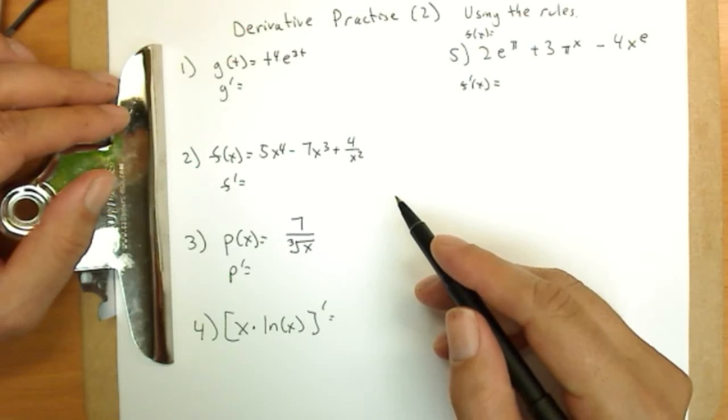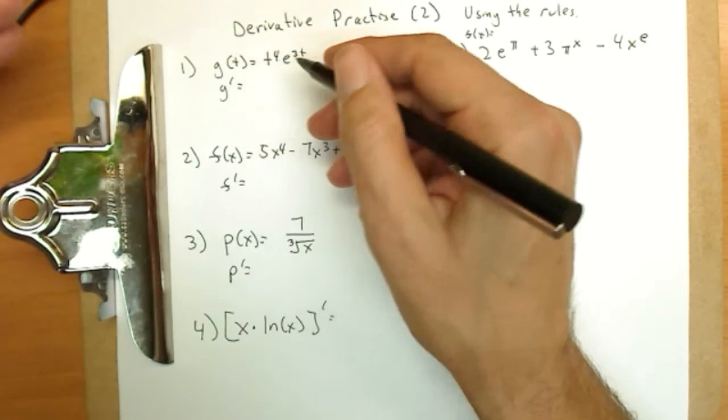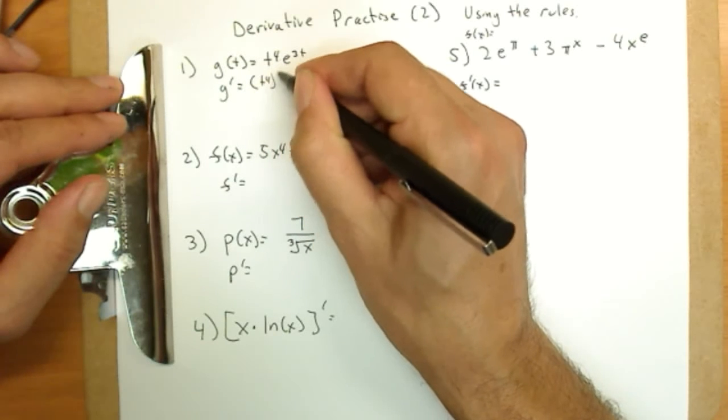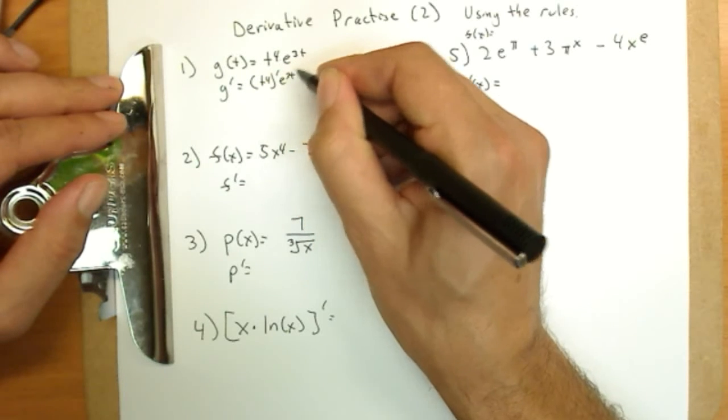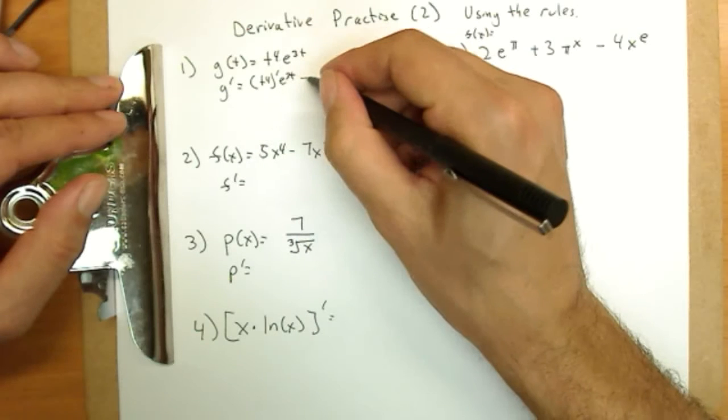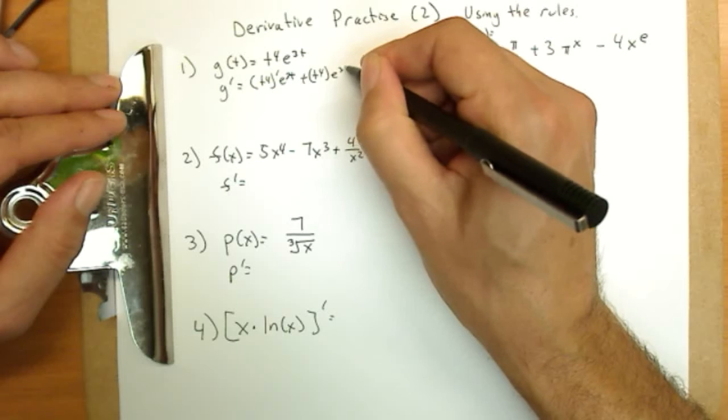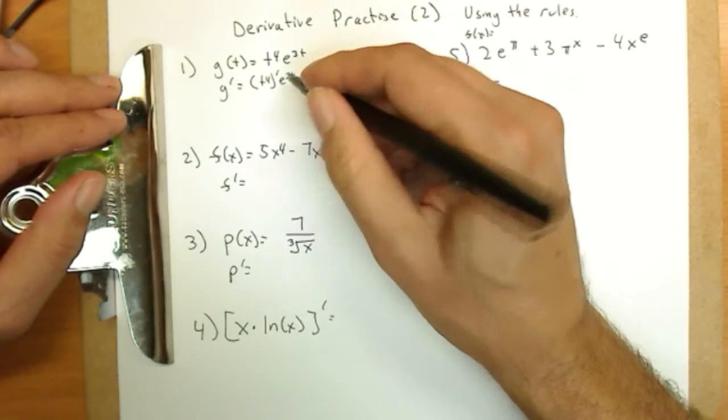Which you'll recall from the previous video was f prime times g, you know, one times the other and so on. This is what it'll look like: t to the fourth prime, e to the third t. So we take the derivative of one but not the other, plus the opposite combination. So t to the fourth without a derivative, e to the three t with a derivative.